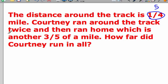Courtney ran around the track twice. I'm going to circle that. Anytime you have key information, I would circle it. She ran around the track twice. That's got something to do with numbers. And then she ran home, which is another three-fifths of a mile. We'll say that that's ten miles, another ten miles. Courtney's a long-distance runner, I guess.